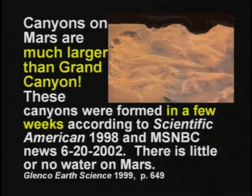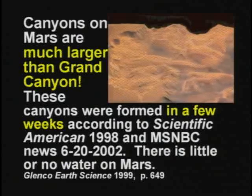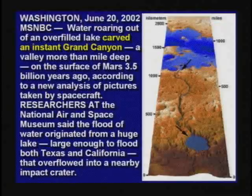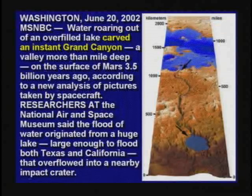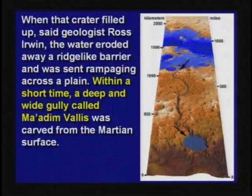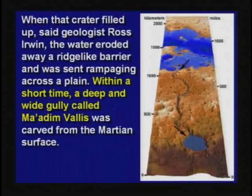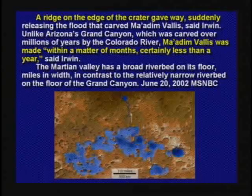When scientists studied the canyon on Mars they said it formed in a matter of weeks — because water in one of the craters overflowed the rim and washed out the canyon very quickly. Yet scientists look at the Grand Canyon on Earth and can't conclude water formed that canyon quickly. If you can look at a canyon on Mars with no water and say it formed quickly, you ought to be able to see the same about the Grand Canyon.